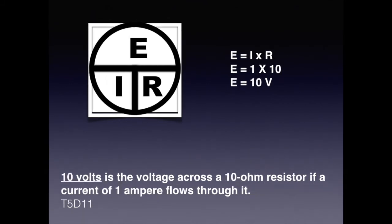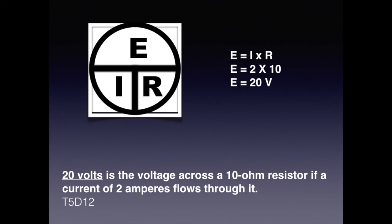In the next question, we are asked to solve for voltage given a current of 1 amp and a resistance of 10 ohms. Covering the chart, E equals I times R. Multiplying 1 times 10 gives 10 volts. For the exam, know that 10 volts is the voltage across a 10 ohm resistor if 1 amp flows through it. In the last question, with 2 amps and 10 ohms, multiplying 2 times 10 gives 20 volts. Know that 20 volts is the voltage across a 10 ohm resistor if a current of 2 amps flows through it.